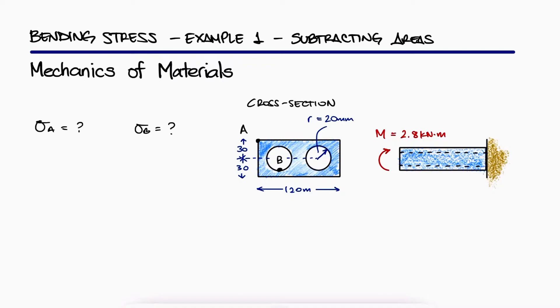To calculate the stresses, we'll use the normal stress due to bending equation we developed in that main video. The moment is given, and we only have to calculate the distance from the neutral axis to A and B in the y direction, and the second moment of area of the cross section.